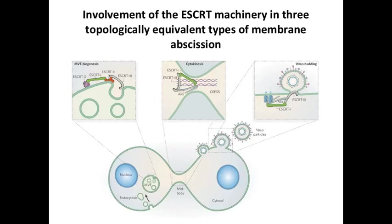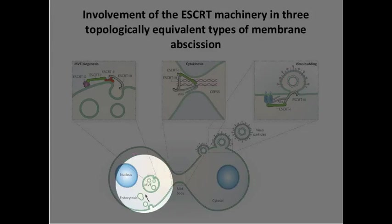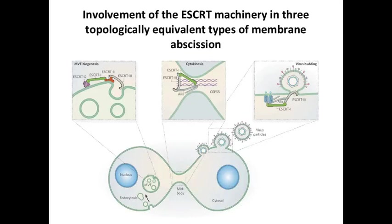The cell system that the virus is interacting with is called the ESCRT system — the escort machinery. The escort machinery is an important component of processes in the cell that resemble budding of virus particles. Within the cell there are structures called multi-vesicular bodies — large membranous structures that contain smaller vesicles budding into them. This is sort of the reverse of a virus budding from the plasma membrane, and the ESCRT proteins drive this process.